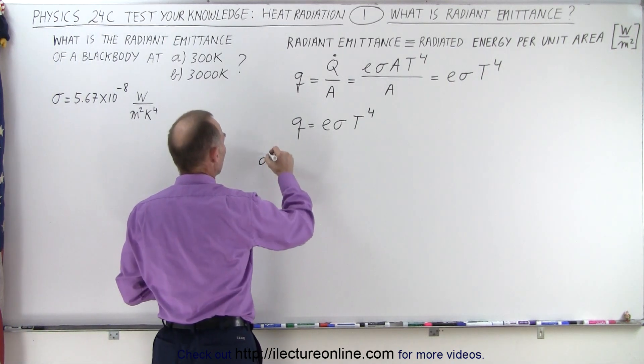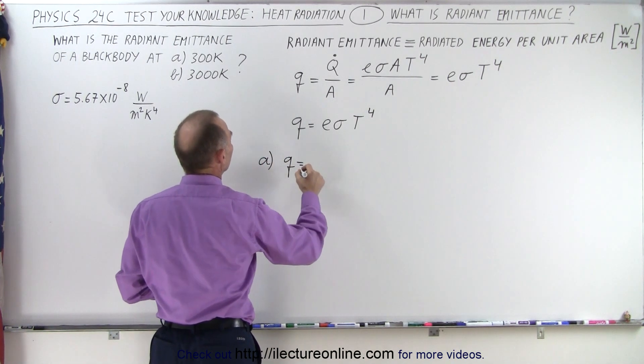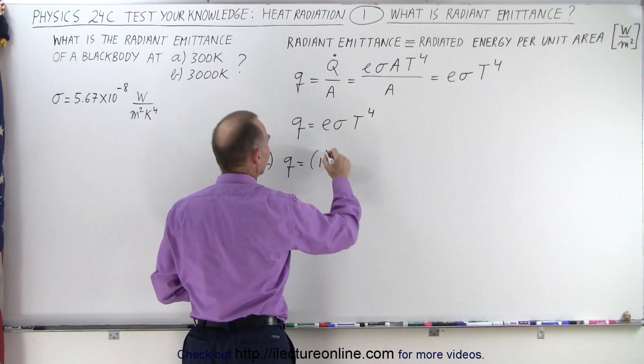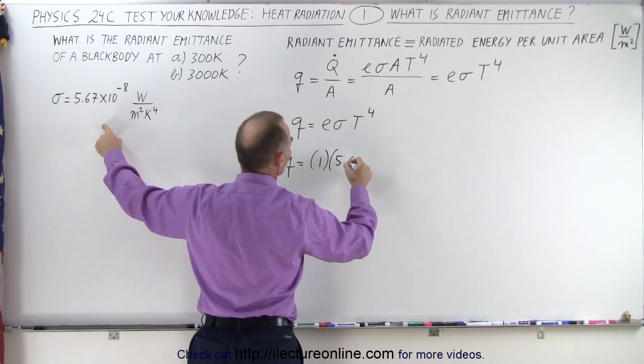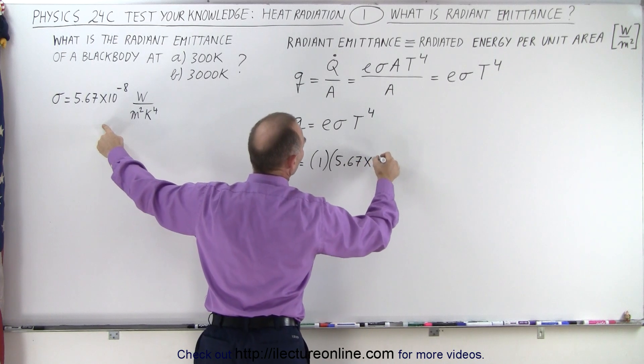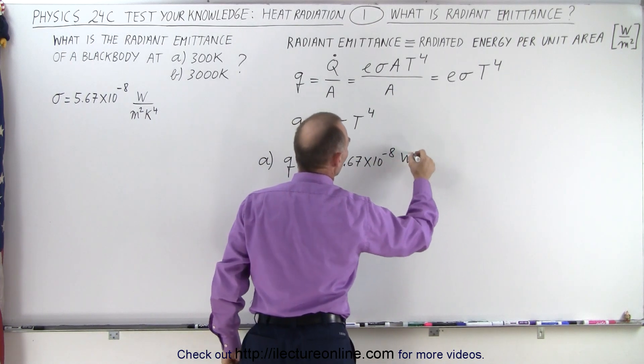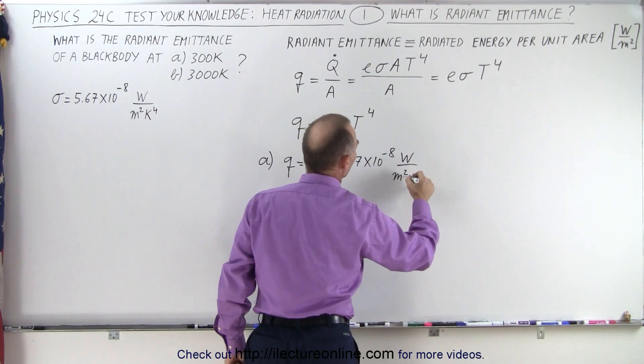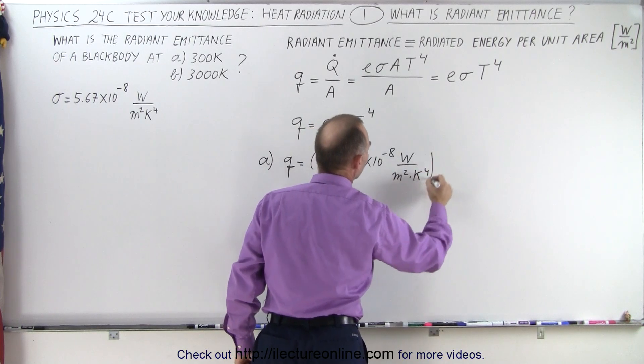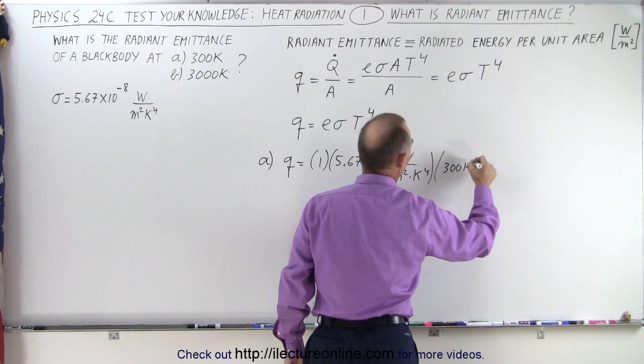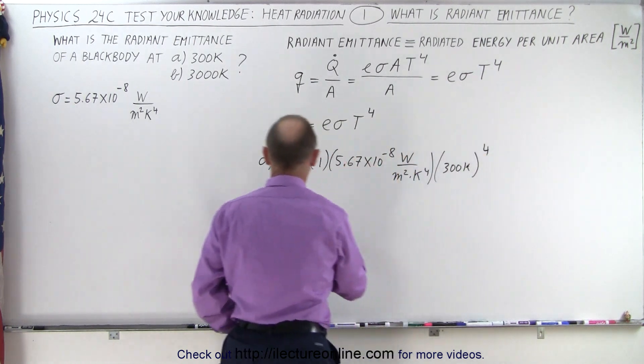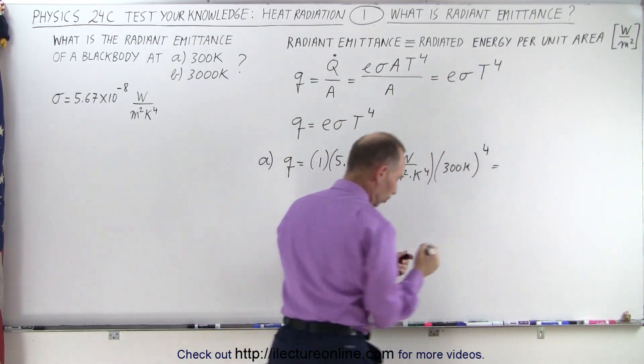Starting with part A, we can say that Q is equal to the emissivity constant, let's take it at 1, times sigma, which is 5.67 times 10 to the minus 8 watts per square meter per Kelvin to the fourth power, times 300 Kelvin to the fourth power. Let's see what that is equal to.